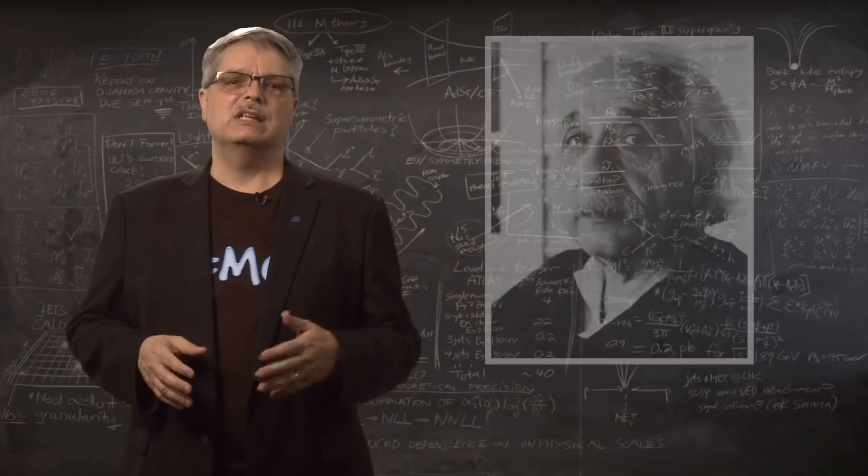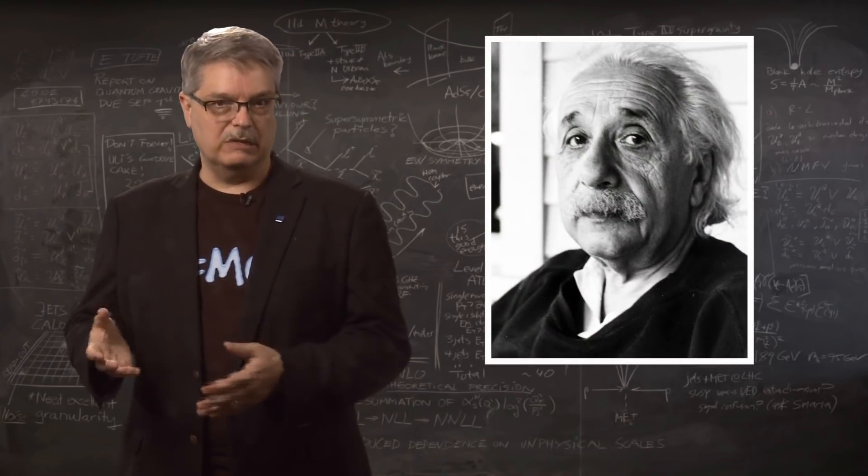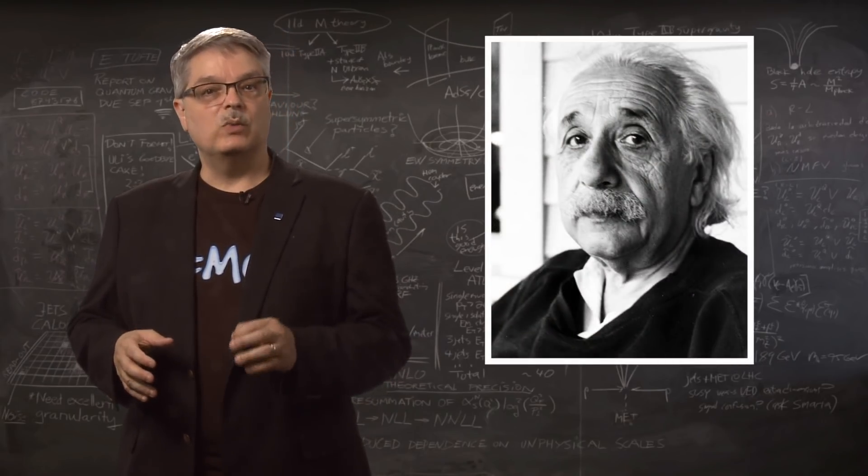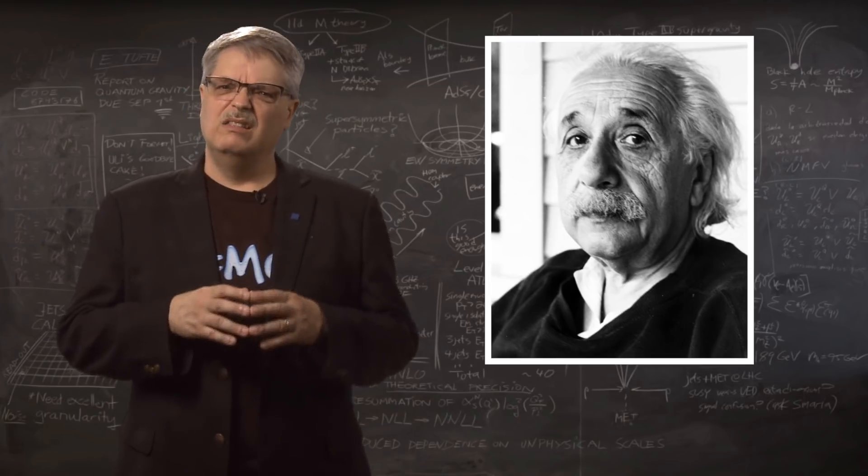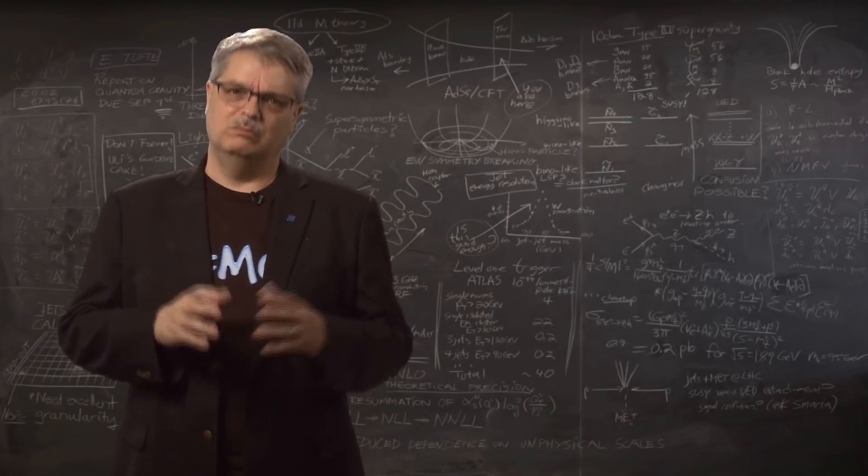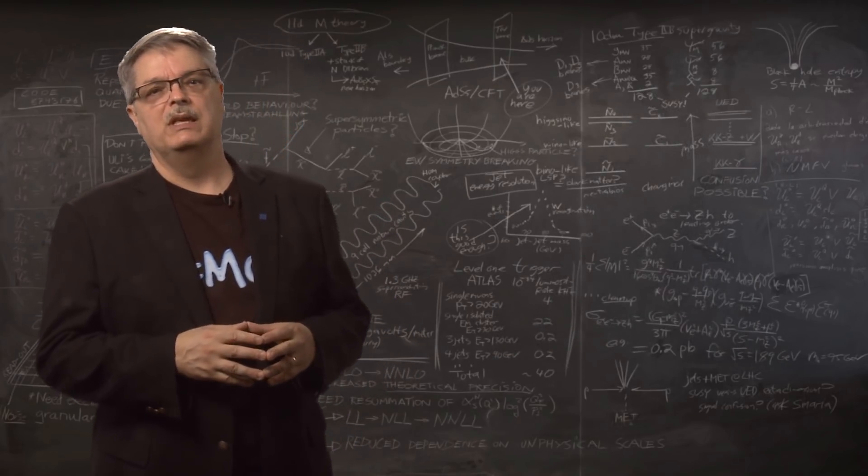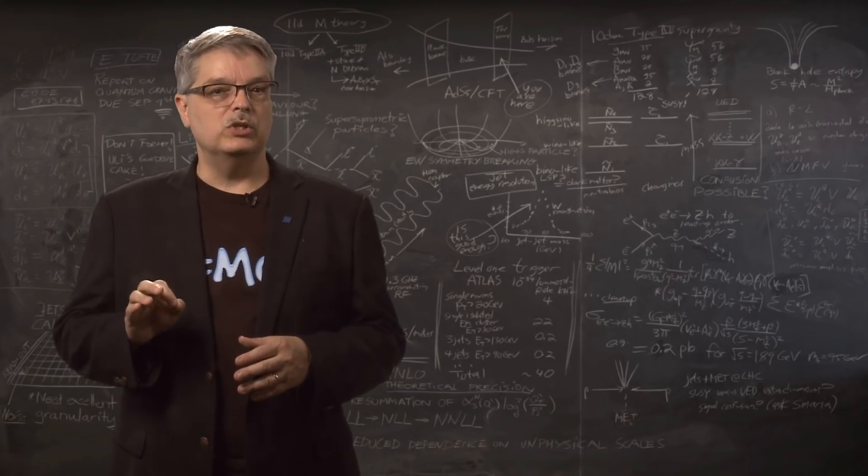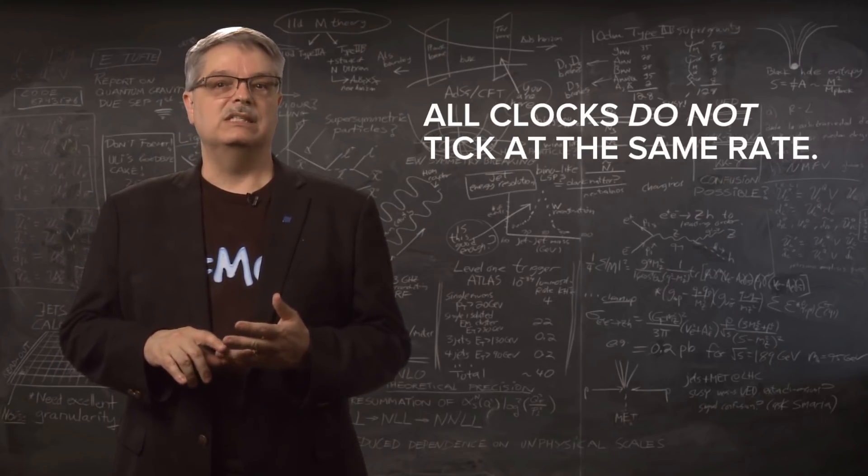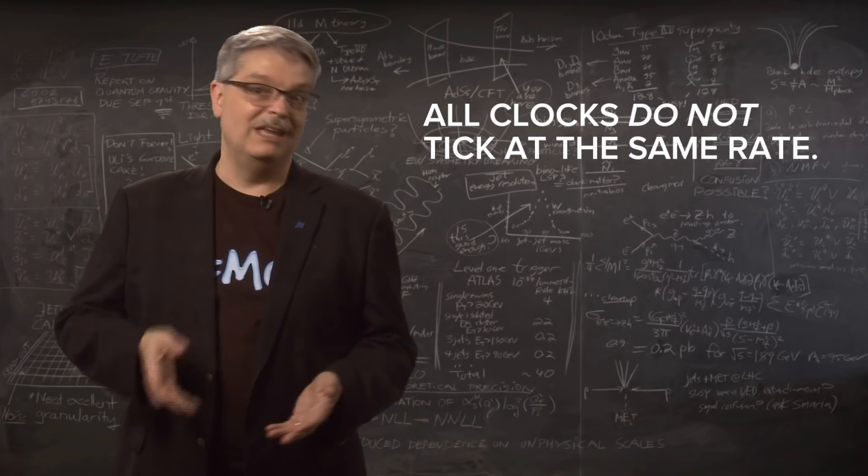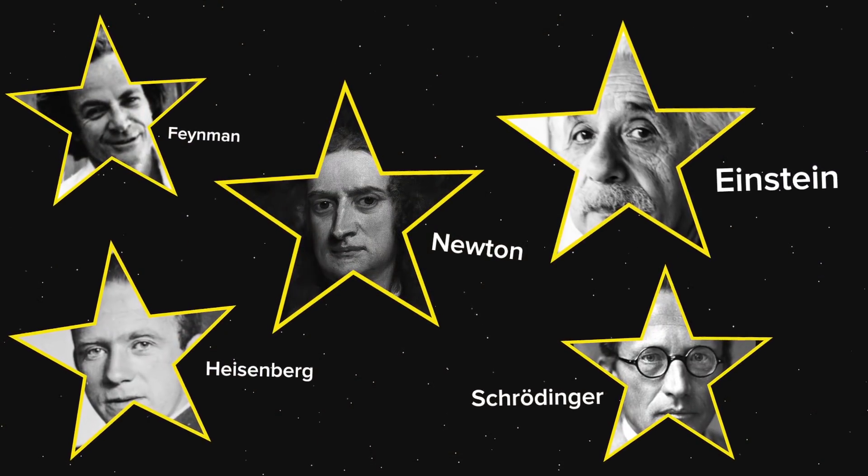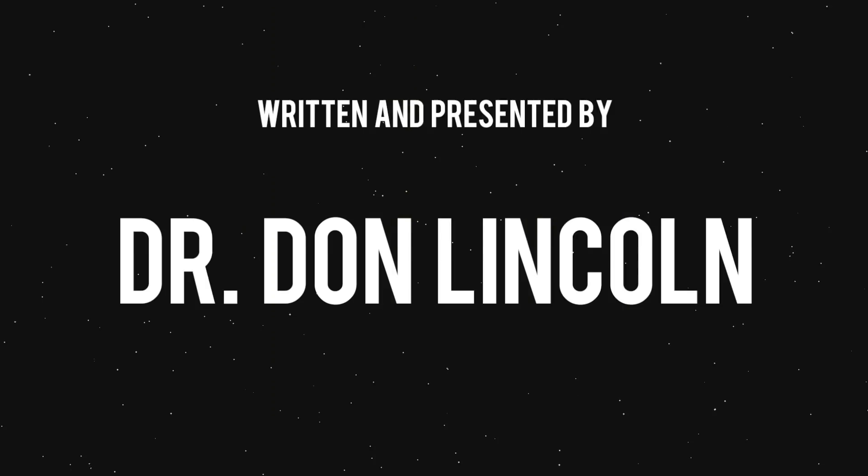While the predictions of Einstein's theory are broader than this single observation, it's the simplest way to confirm this theory. The other predictions have also been confirmed, but we'll leave those stories for another time. However, the bottom line is that our intuition that all clocks tick at the same rate is simply wrong, and Einstein retains his place among the pantheon of physics superstars.